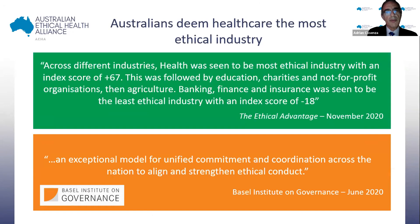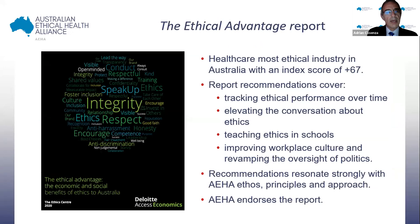The healthcare sector ranks with an index score of 67, followed by education, charities and not-for-profit organisations, and then agriculture. In June of this year, the Basel Institute on Governance recognised the Australian Ethical Health Alliance as an exceptional model for unified commitment and coordination across the nation to align and strengthen ethical conduct. The landmark report has been widely covered in the press, and a pitch has been put to the federal government and the Australian people for an investment of over four and a half billion dollars in ethical infrastructure.